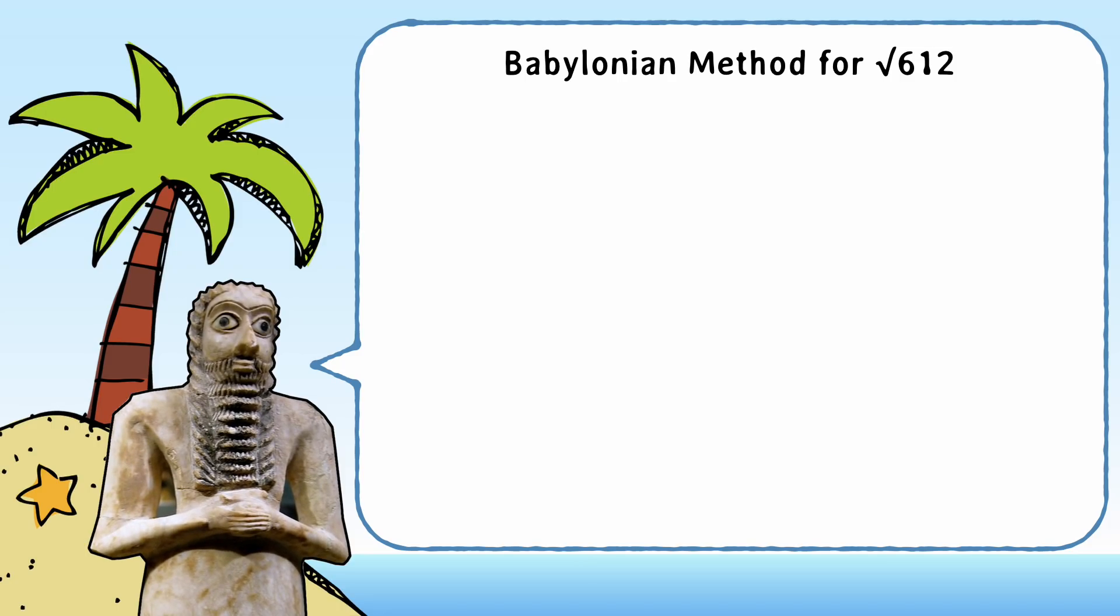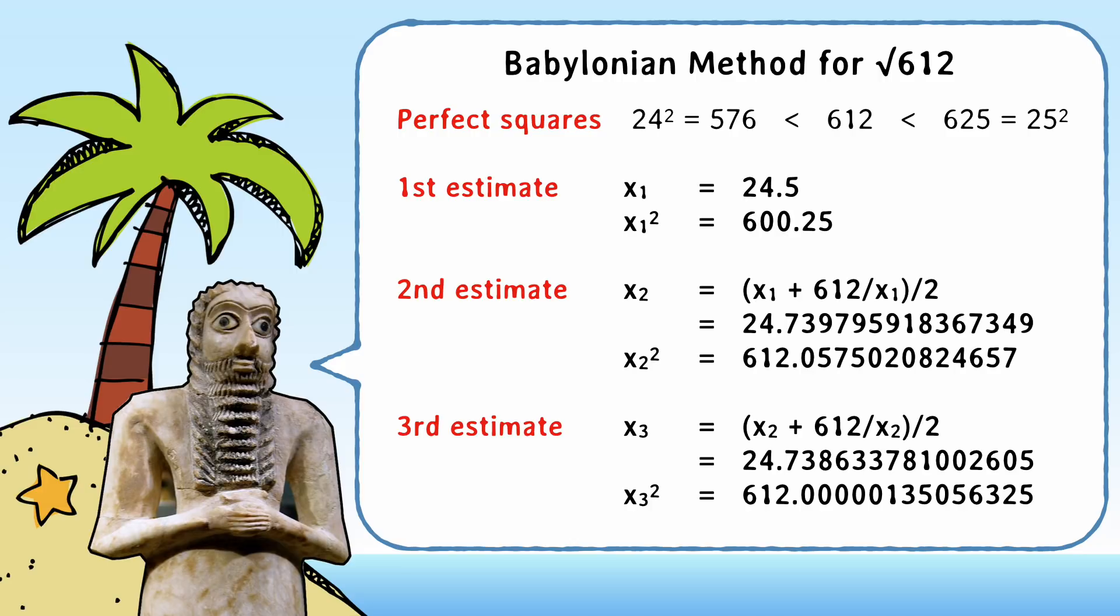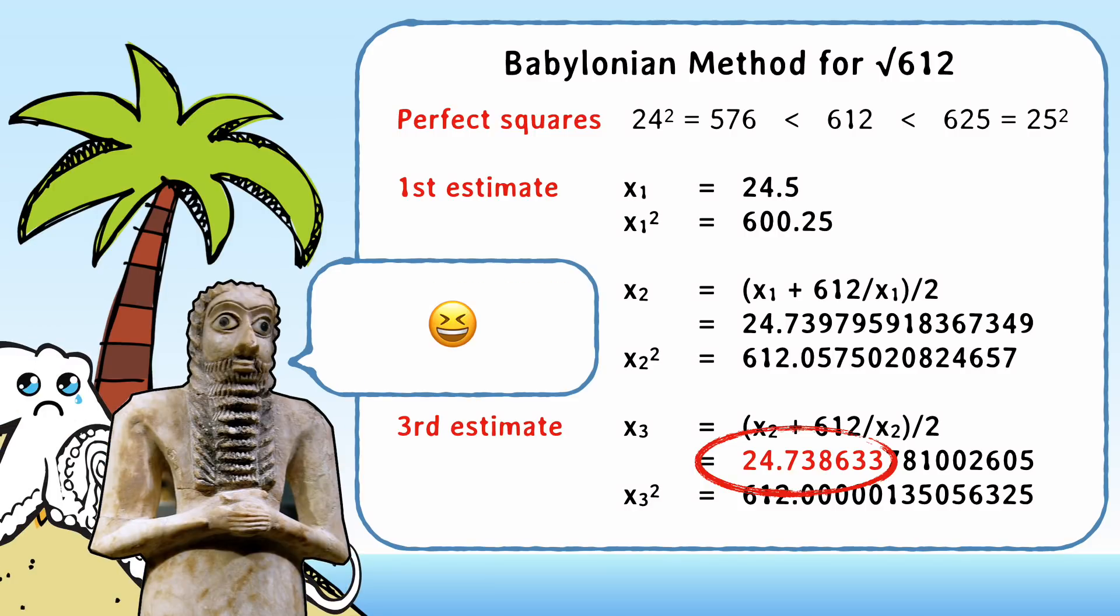So those Babylonians were onto something, right? See how quickly their method converges? It took the octopus about 15 iterations to get to 5 decimal place accuracy, but this technique gets there in just three iterations. Not feeling so smart now, are you, cephalopod?